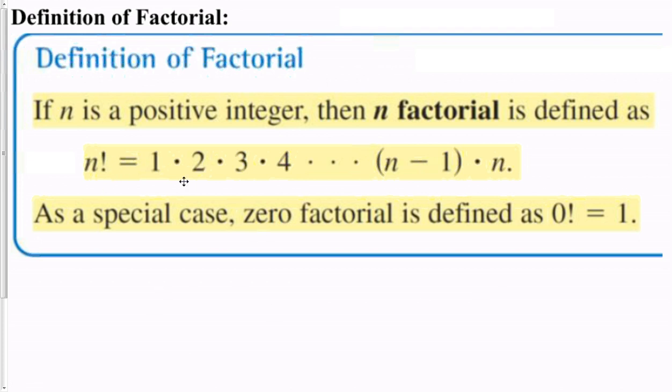Secondly, typically, even though this definition is written that way, more often than not, we'll go backwards. If they tell us 5 factorial, for example, I will do 5 times 4 times 3 times 2 times 1. Basically, a countdown method is how I will show it, which would equal the same thing.